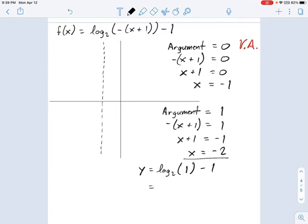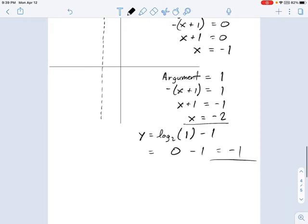Log, and it doesn't matter what the base is, if the argument is one, the answer is always zero. So y equals zero minus one, and that's negative one. Okay, so in other words, this has produced for us a point. We create an x, y coordinate point, which is at x equals negative two, y equals negative one.